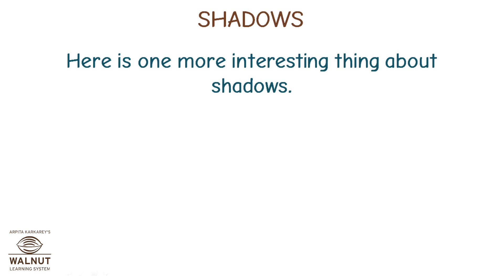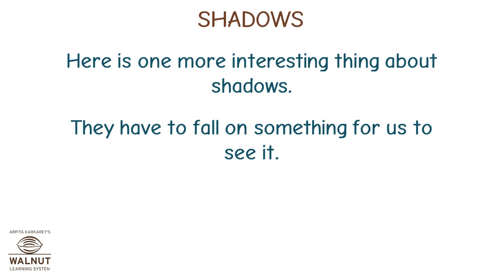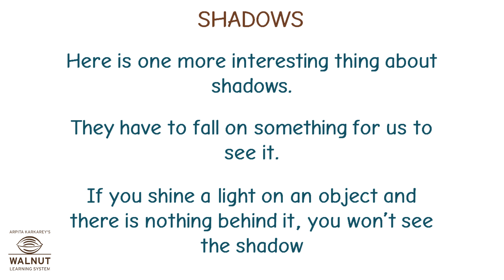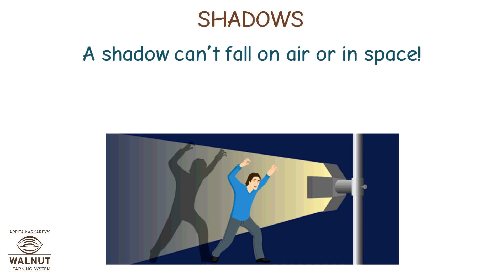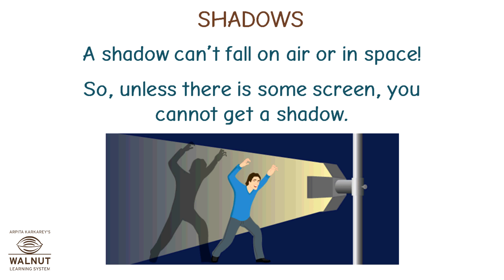Here is one more interesting thing about shadows. They have to fall on something for us to see them. If you shine a light on an object and there is nothing behind it, you won't see the shadow. A shadow can fall on a wall, a ground, a screen, etc. A shadow can't fall on air or in space. So, unless there is some screen, you cannot get a shadow.